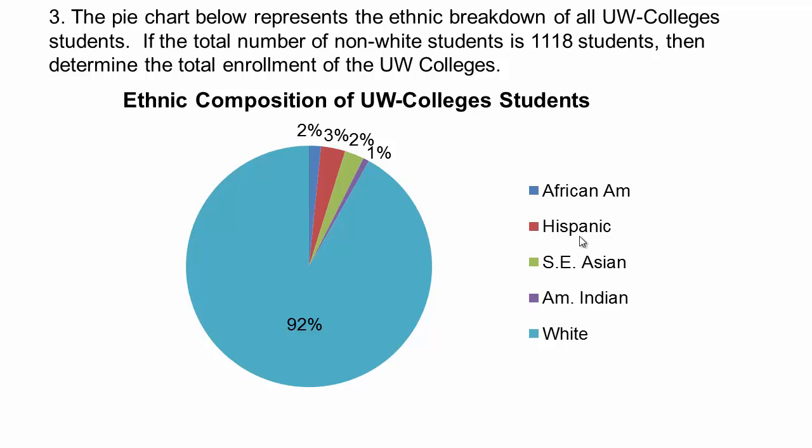So 92% of the students are white, and the rest of the demographics are broken down in these percentages. How do we figure out what the total number of students are? We know that this is 5 plus 3, 8. So 8% of the students are 1,118.